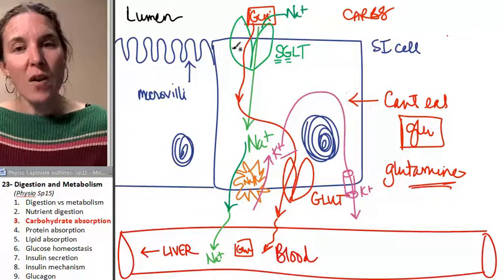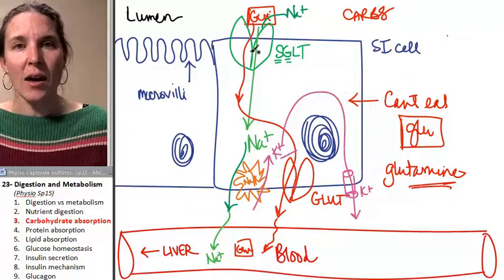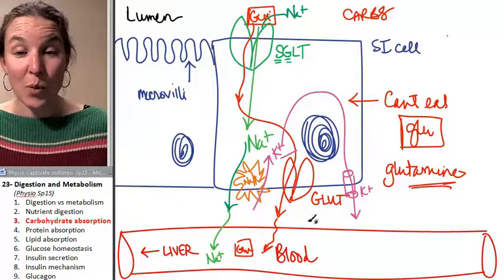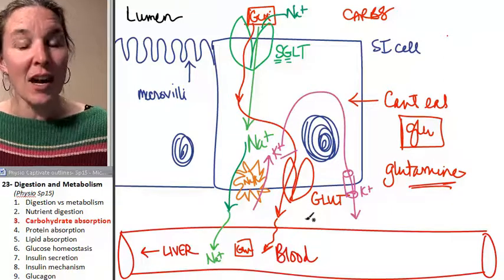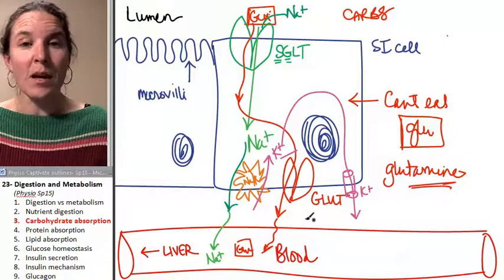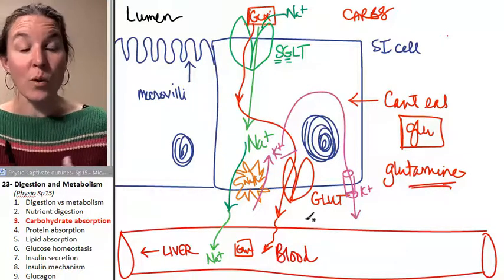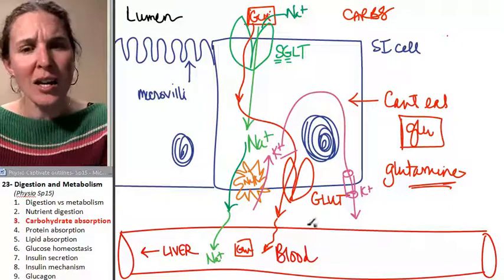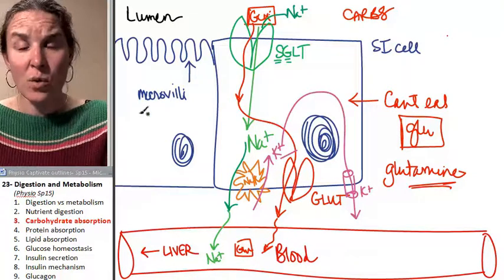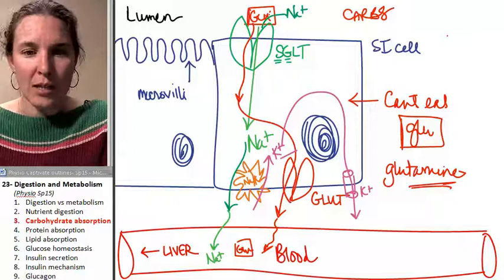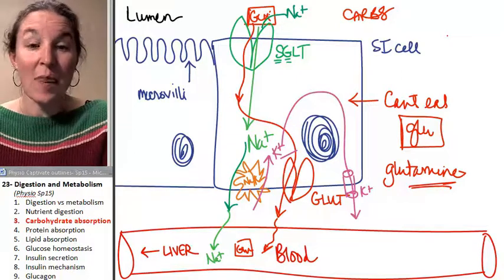So, do you see how, if I set up a small intestine cell with these transporters in this configuration, I can actually absorb glucose as long as I want? That's really important. In fact, we're going to come back to that and spend the whole last part of the lecture talking about how do we get the glucose into the rest of our cells? But before we do that, let's talk about protein absorption and how we go about that process.